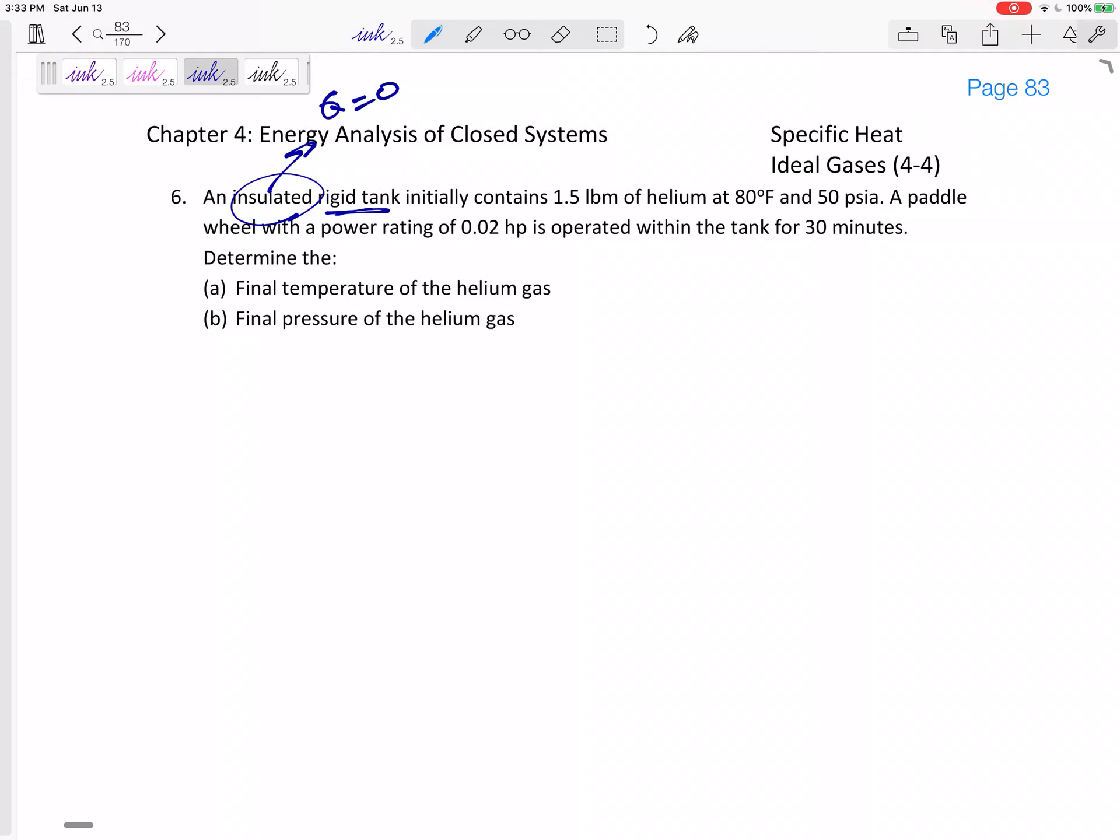Okay, so we need to keep up with all the energy, right? Q plus W equals delta E. There's no Q right here. The W, I think that this paddle wheel might be a work that we are putting into our system. And should this delta E be delta H or delta U? Well, it's a rigid tank, so this should be delta U.